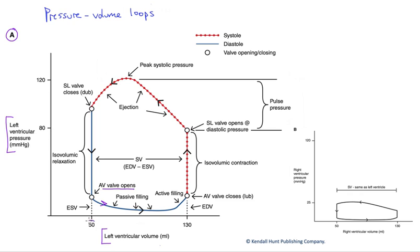Note that we are starting at a volume above zero. We have an end systolic volume. That's the blood left over from the previous ejection cycle. It's not zero. We're going to fill passively and then actively all the way up to our end diastolic volume.